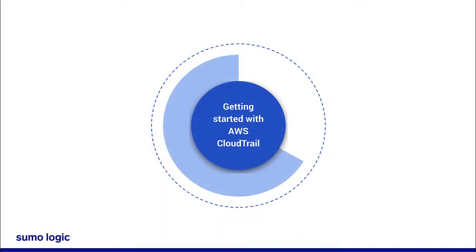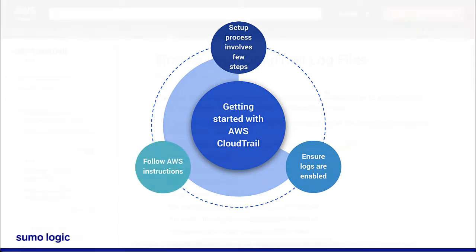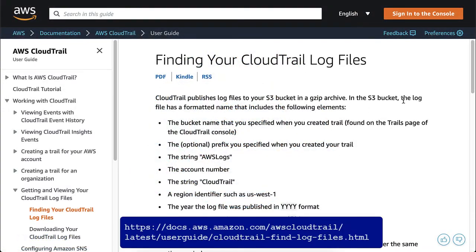Getting started with AWS CloudTrail takes a few steps, but we will guide you through the process to get you set up. First, make sure that you have logs enabled for your AWS CloudTrail account. AWS has the instructions here.